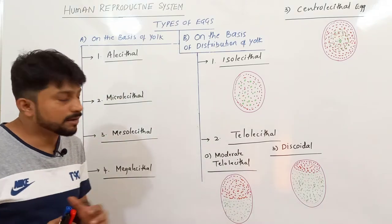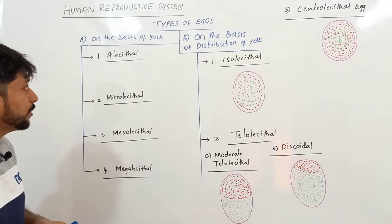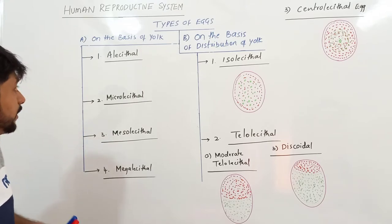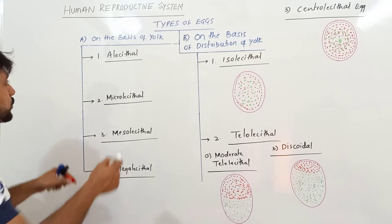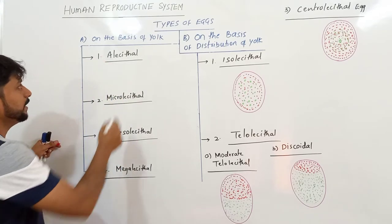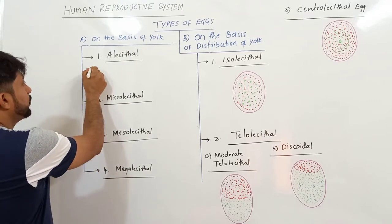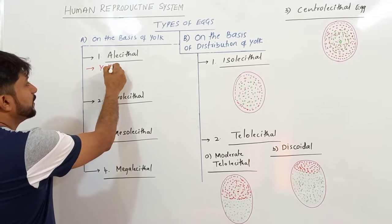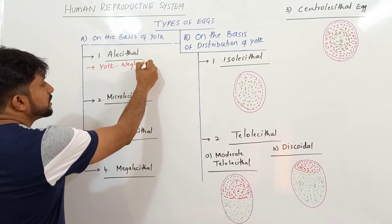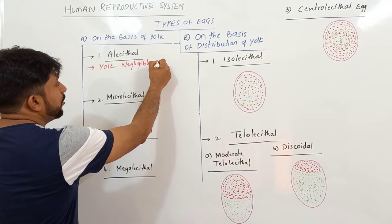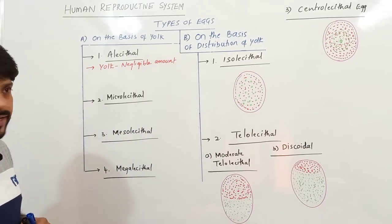Based on this, the eggs are classified. First, on the basis of amount of yolk present in the eggs, eggs are classified into four different types. The first one is Alicethal. Alicethal eggs are the eggs where the amount of yolk is negligible. Such eggs are called Alicethal eggs.